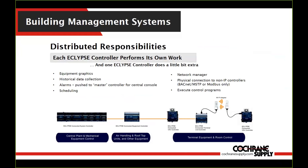It's a distributed architecture — each Eclipse controller handles its own work, its own graphics, its own alarming. Each controller does its equipment graphics, runs its own trends, and has alarms it can keep locally or push to an alarm recipient. Every Eclipse controller is a BACnet building controller with BTL listing, so they can do trending, alarming, and all specifications of a building controller. They manage networks — our S1000 can pull in MSTP or Modbus devices, and our 303s can do some Modbus — and they execute the control for typical applications, whether that's a VAV program, an RTU, or a plant application.